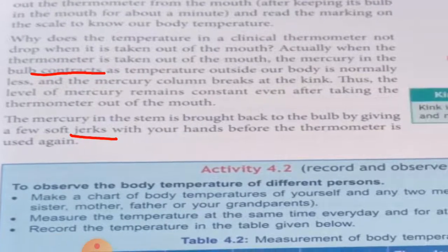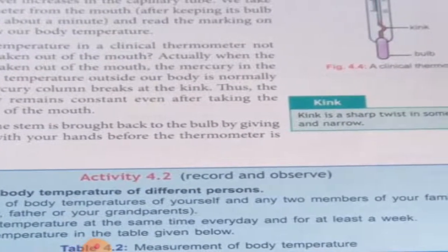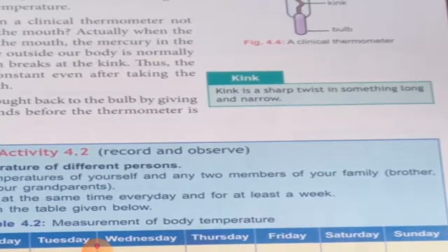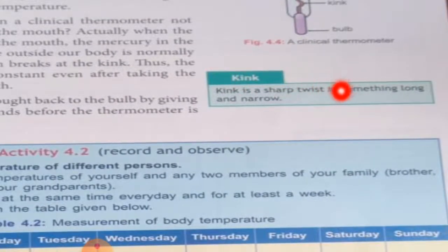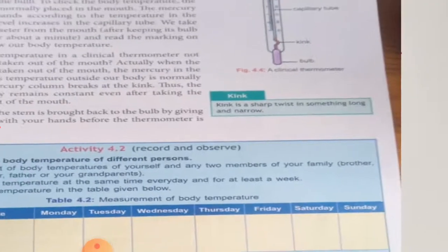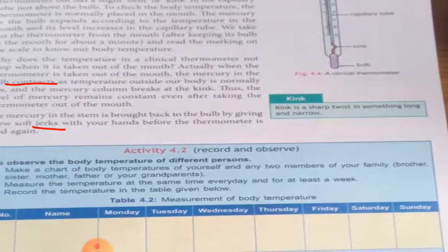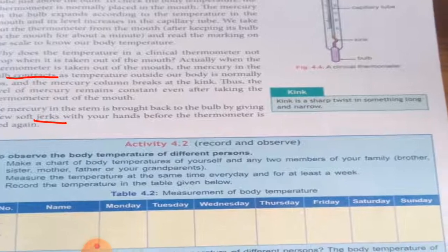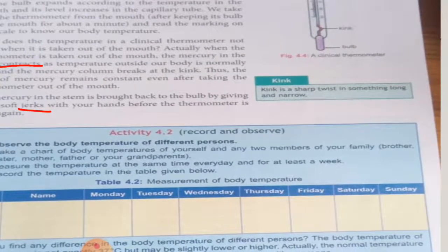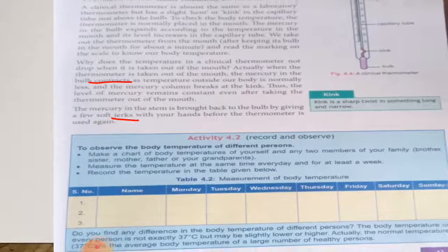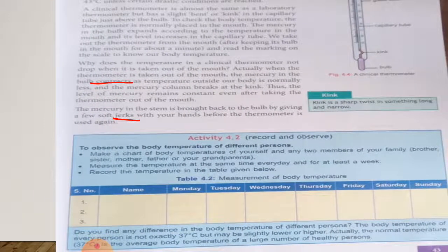So mercury returns to its level in the thermometer if we jerk the thermometer several times with our hands before it is used again. The definition of kink: a kink is a sharp twist in something long and narrow. So the kink is a sharp twist in the thermometer because the thermometer is long and narrow.